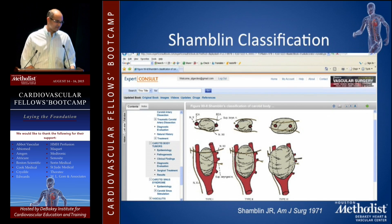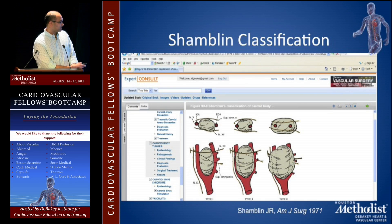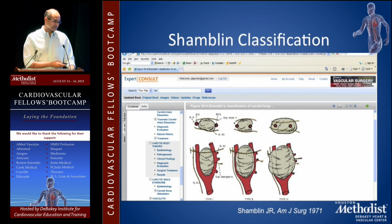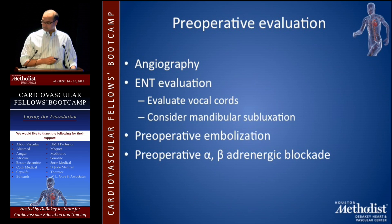The Shamblin classification, described in 1971: Type 1 is where the tumor sits between the two carotid arteries, external and internal. Type 2 is where it encases them halfway or three-fourths. Type 3 is where it encases both carotid arteries — that's when you start thinking about carotid replacement and interposition. This was actually a board question in the last couple of years.